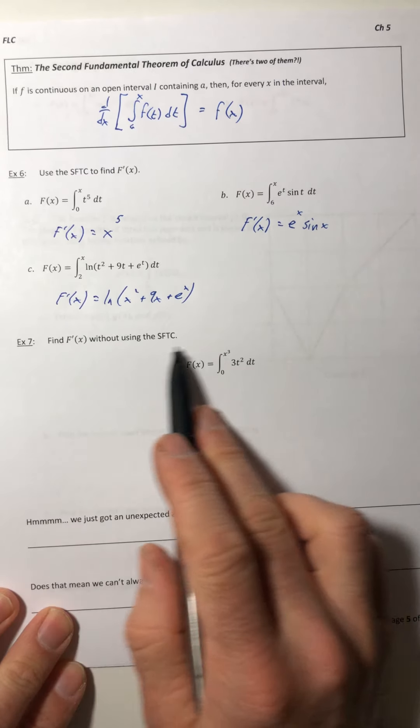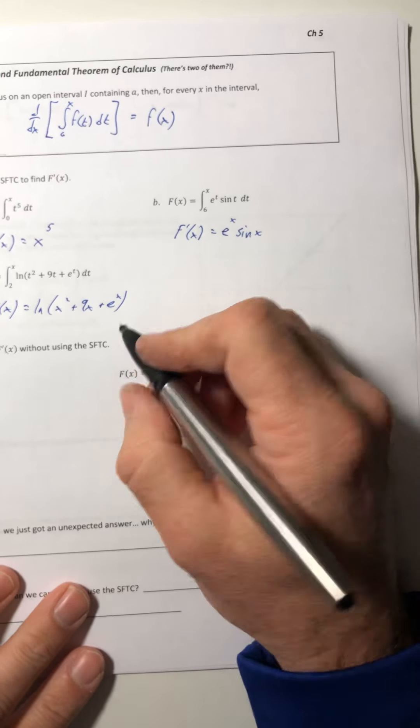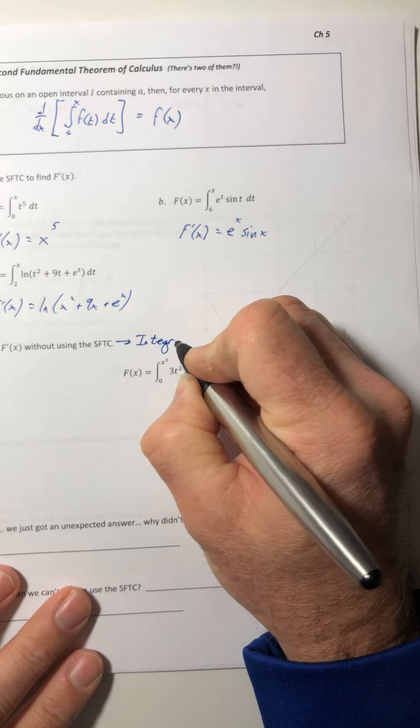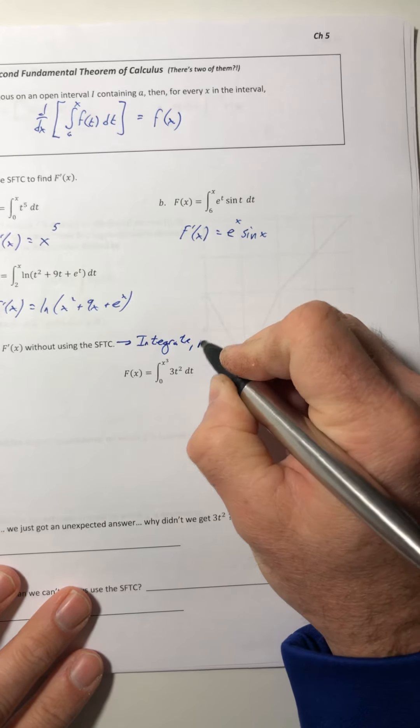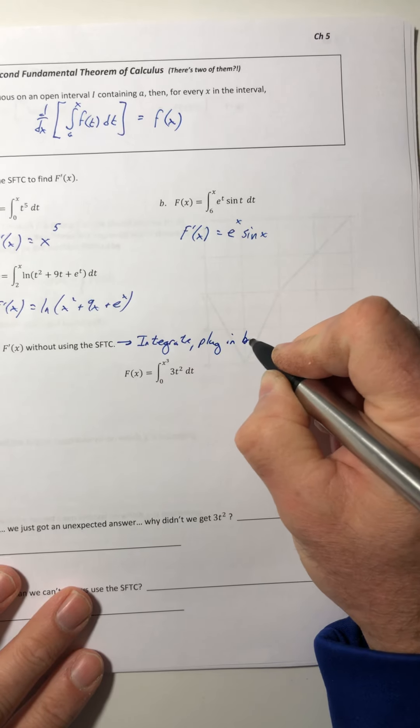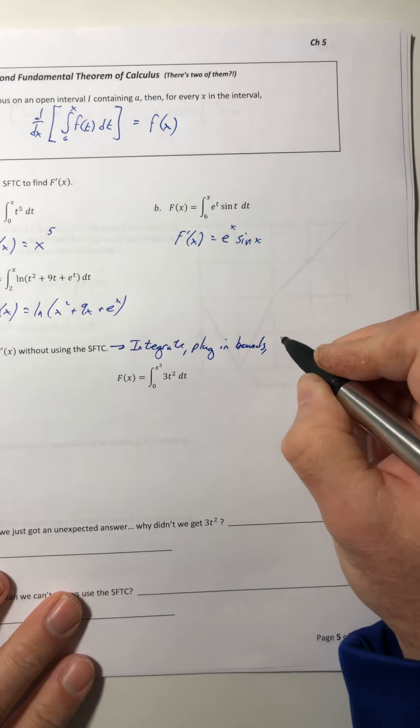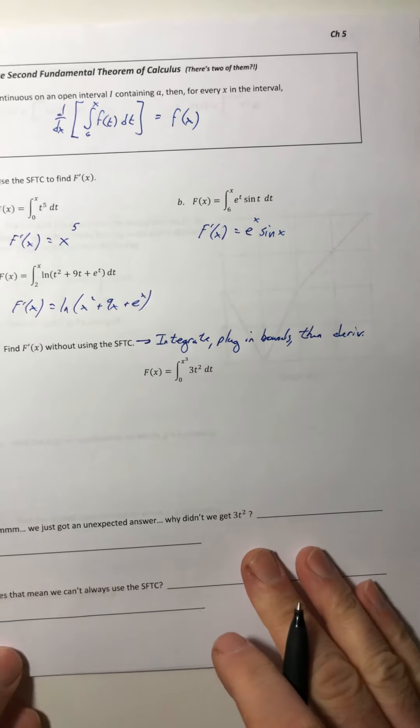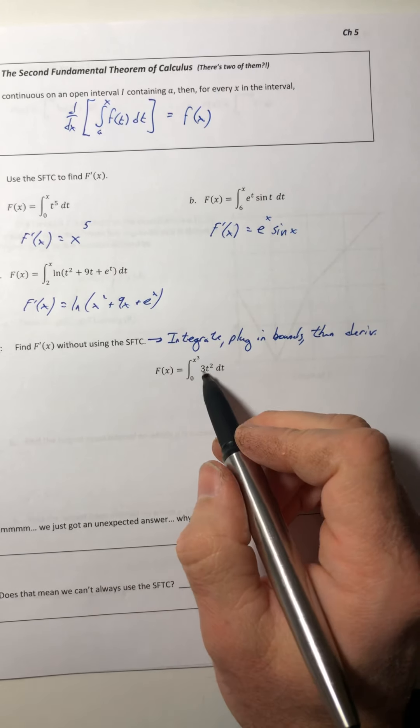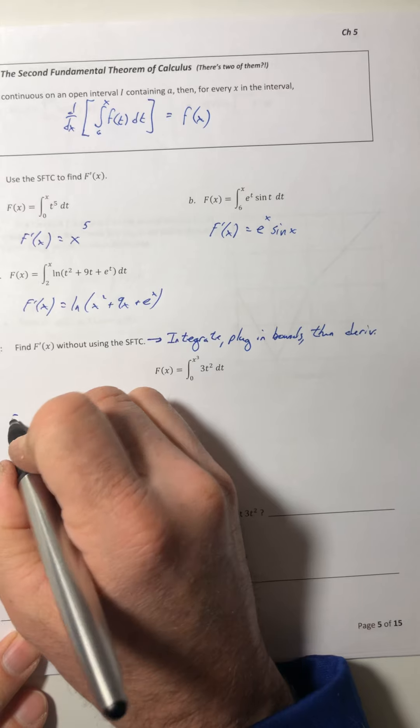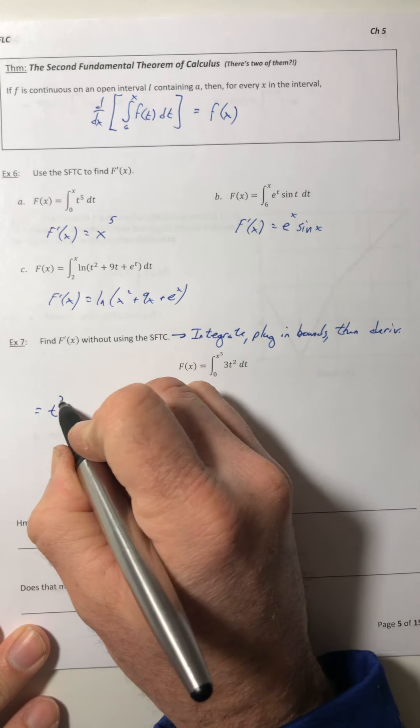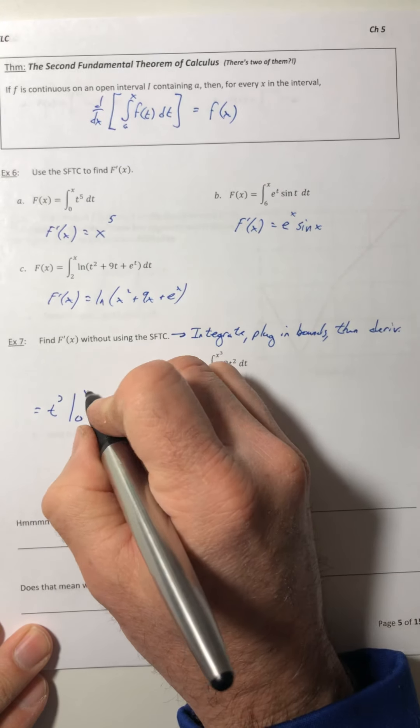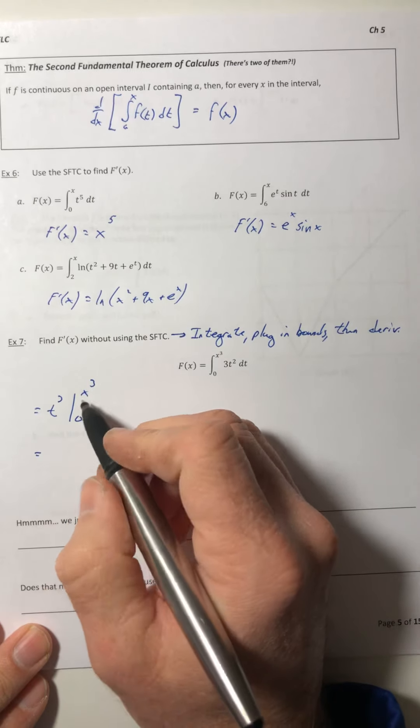But let's look at this one. So at first it wants us to find the derivative without using the theorem. So that means we've got to do it the old fashioned way. We've got to integrate, plug in the bounds, then we can get the derivative. So we're going to integrate 3t squared. So t to the third, going from zero to x to the third.